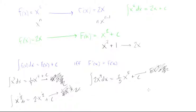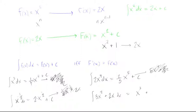Let's do one more example: the integral of 3x² + 2x dx. We use the addition rule and look at each term individually. For 3x², raise the power by 1 to get x³; differentiating x³ gives 3x², so that's correct. For 2x, raise the power to get x²; differentiating x² gives 2x, so that's correct too. The antiderivative is x³ + x² + C.